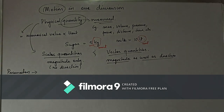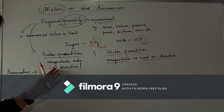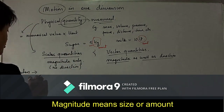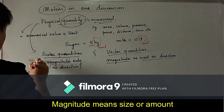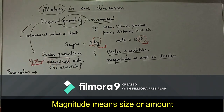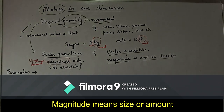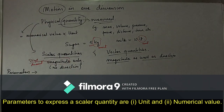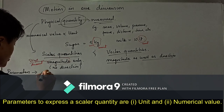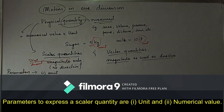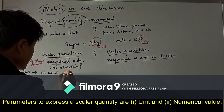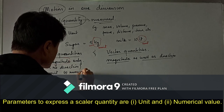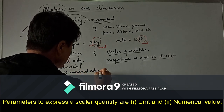To measure a scalar quantity, we require magnitude only. Magnitude means size or amount — for example, 5 kg sugar. We cannot write only '5 sugar'; we must give the unit also. The parameters for a scalar quantity are: (1) the unit in which the quantity is measured, and (2) the numerical value.